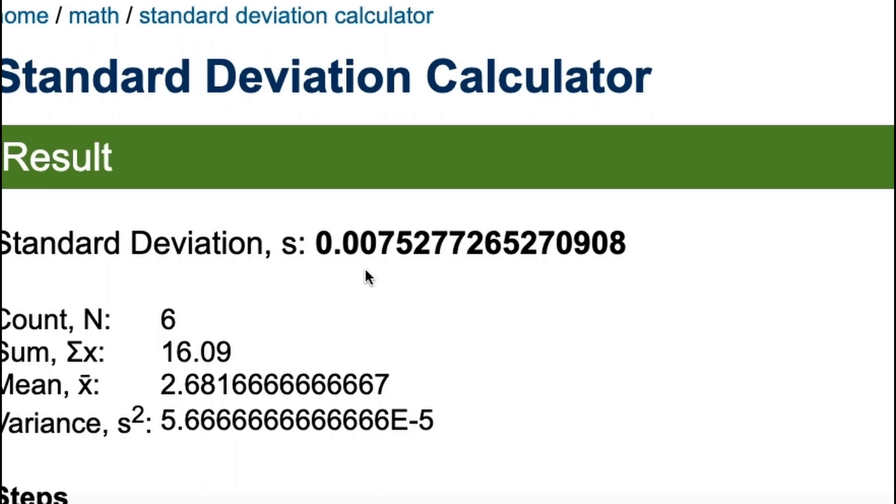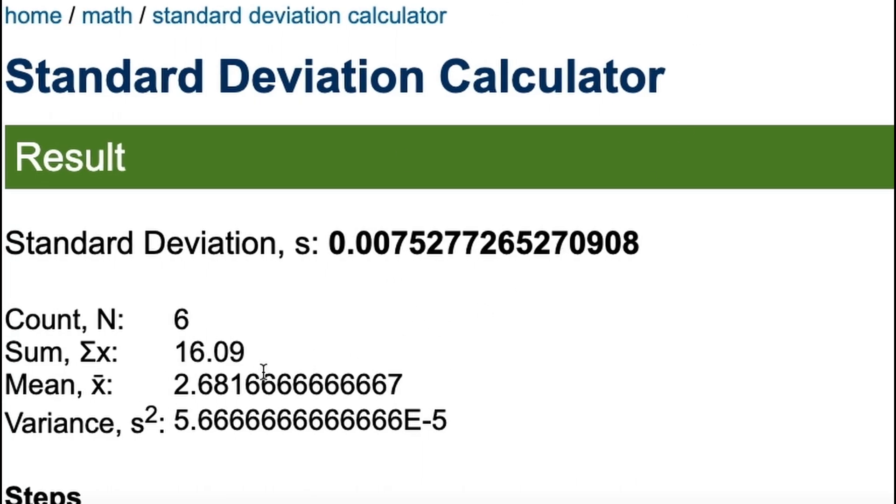I usually use the first one that comes up, this one right here. And you can put all your measurements into a comma separated list. You'll want to select sample because there are many more measurements that you could make. We just took a handful of them and we're going to use that as what's called a sample in statistics. So click that.